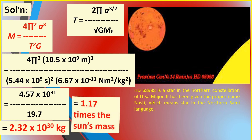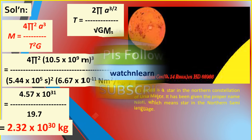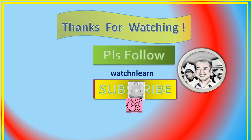When compared to the mass of our Sun, 1.99×10³⁰ kg, dividing gives 1.17 to three significant figures. This means HD 68988 is 1.17 times as massive as our Sun — in other words, just a little bigger than our own Sun. Thank you very much for watching. Please follow me on my Facebook page and subscribe to my YouTube channel.